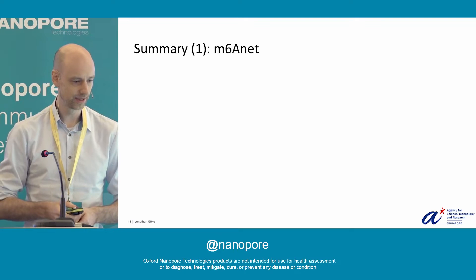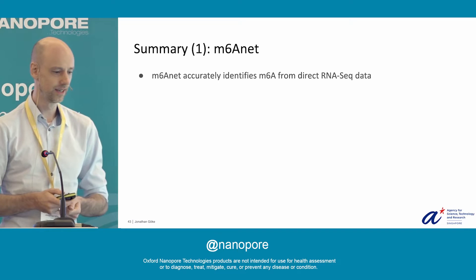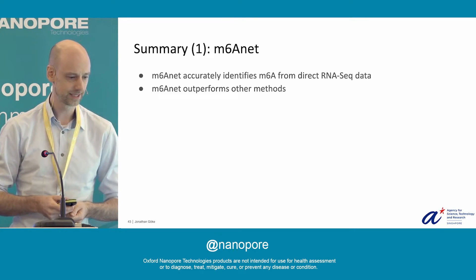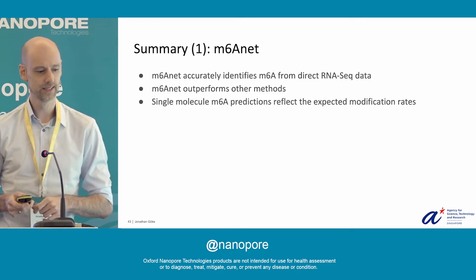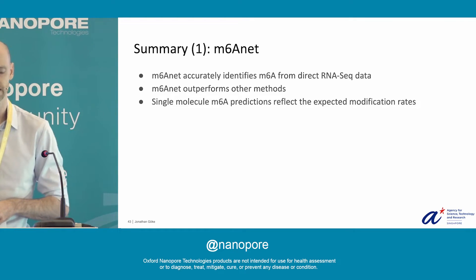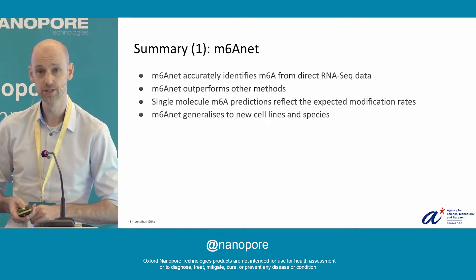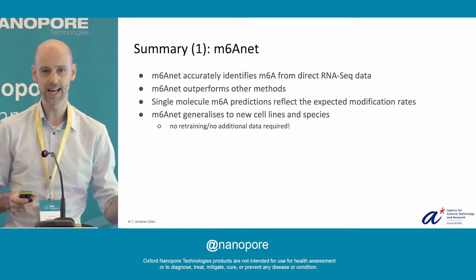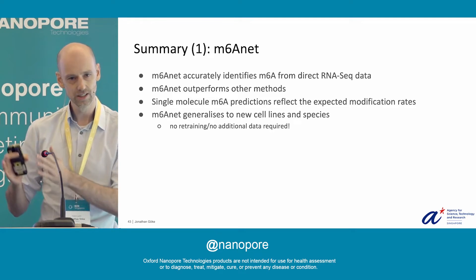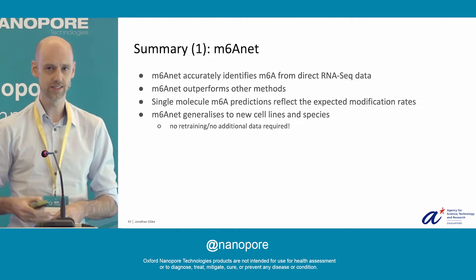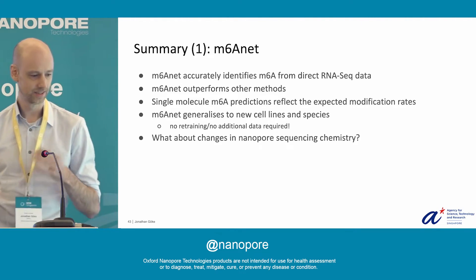In summary, M6ANet accurately identifies M6A from direct RNA sequencing data, with very good performance compared to other methods. We can identify M6A for single molecules, and it reflects the overall expected modification rates. M6ANet generalizes very well to new cell lines and new species, meaning you can use the model as-is on direct RNA sequencing data — no training, no control dataset, nothing. You can apply it on just a single run of direct RNA sequencing data with no retraining required.